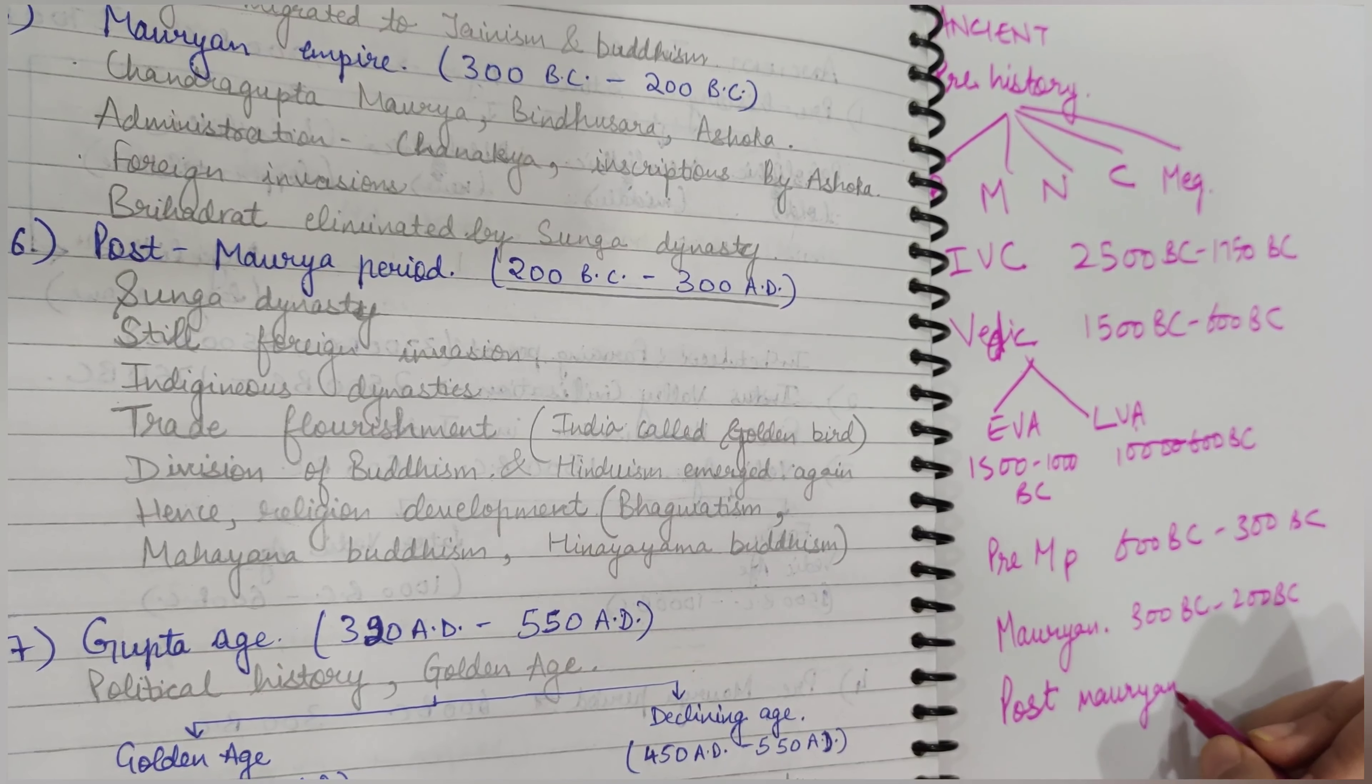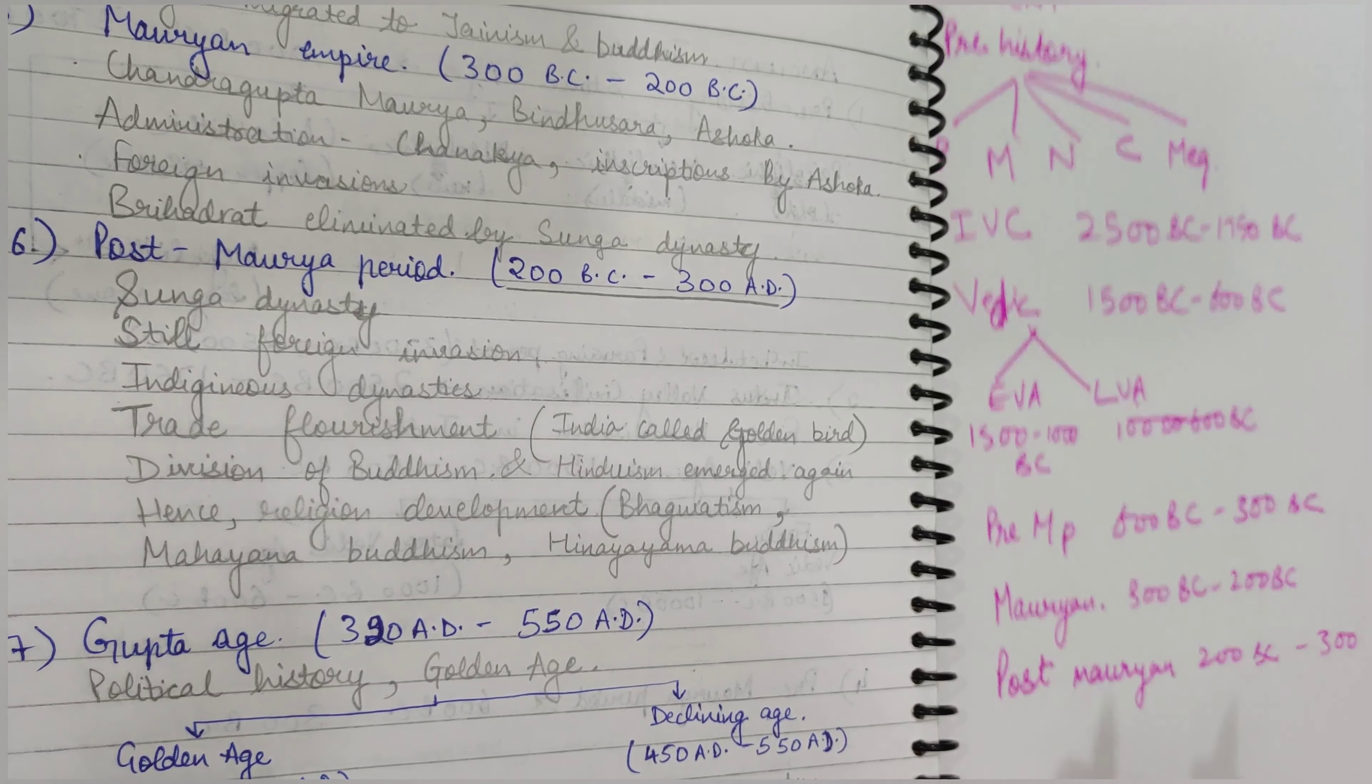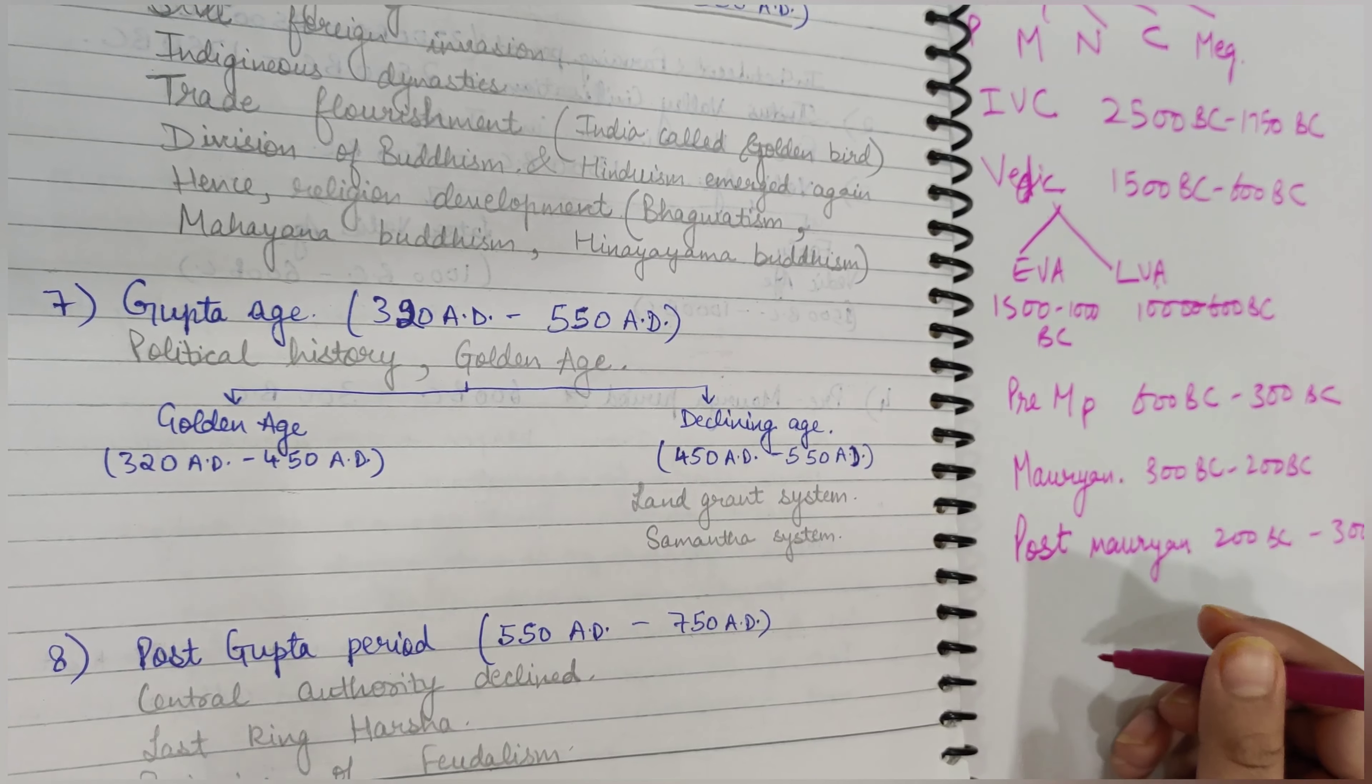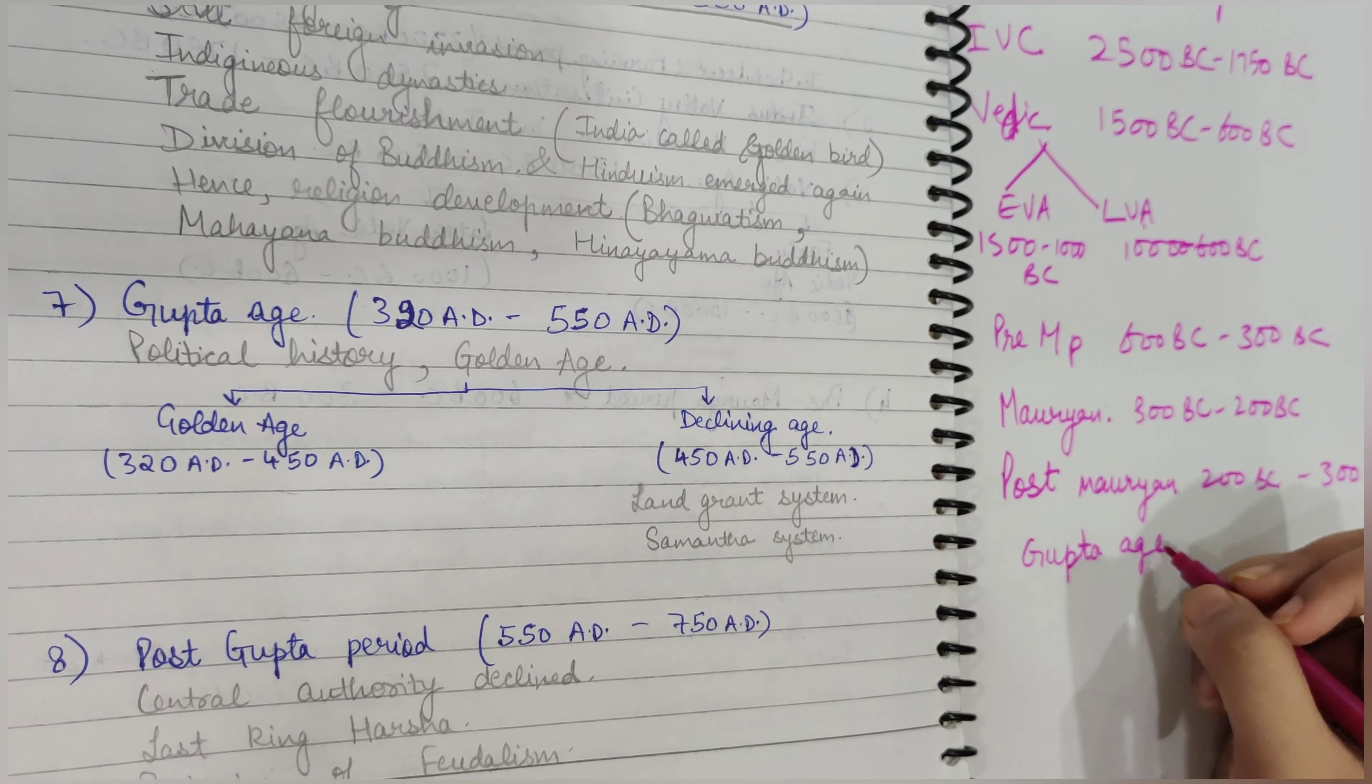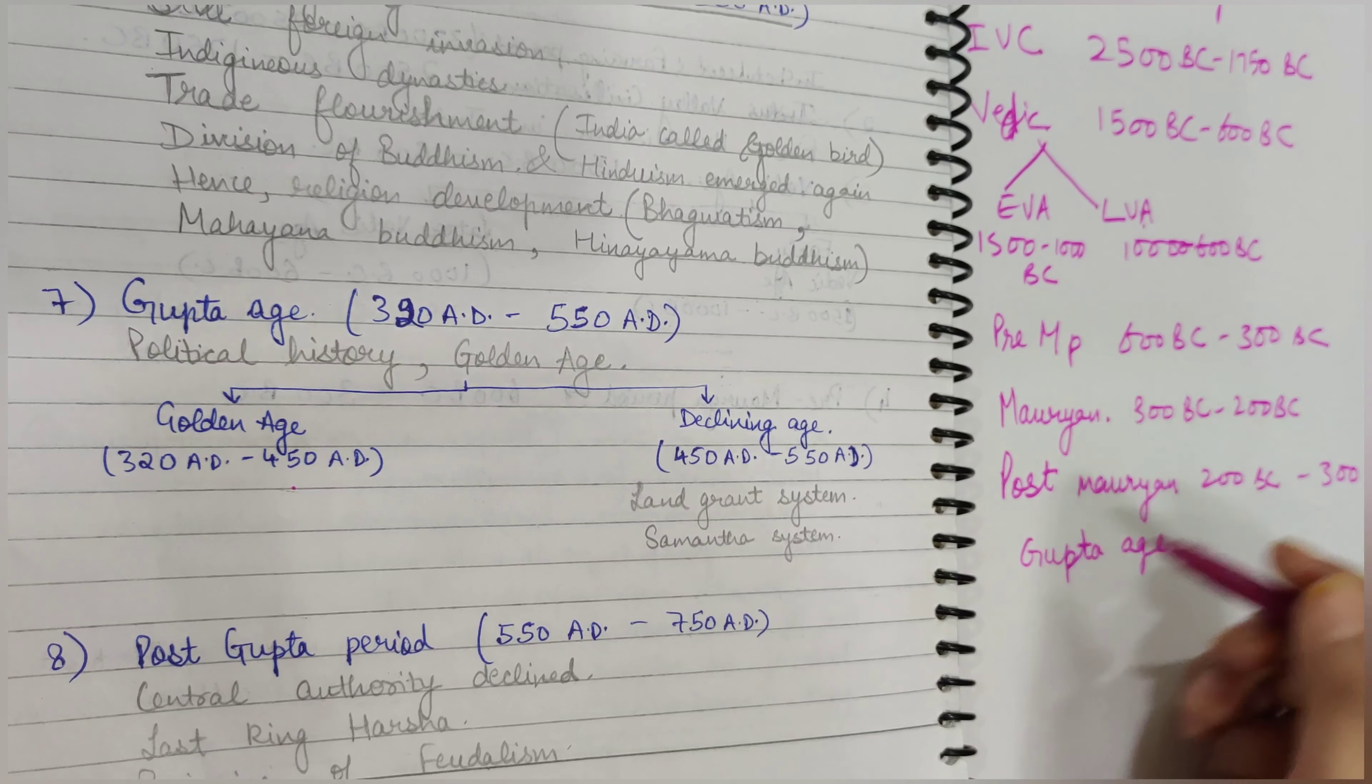The Post-Mauryan period is from 200 BC to 300 AD, which means about 500 years. After that comes the Gupta Age. Gupta Age is very famous for political history and is also called the Golden Age. Gupta Age has two phases: the growing phase in which architecture and other things were growing.